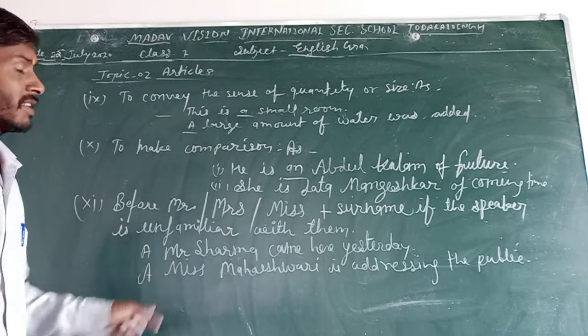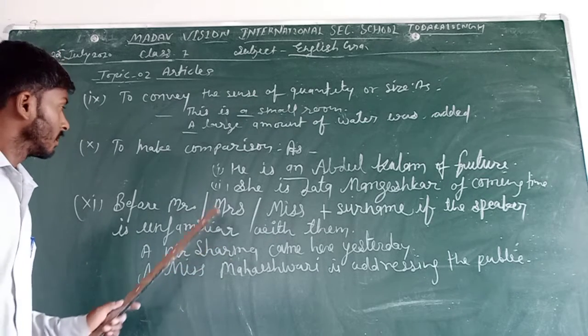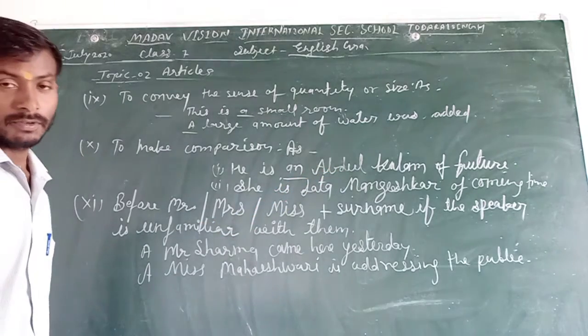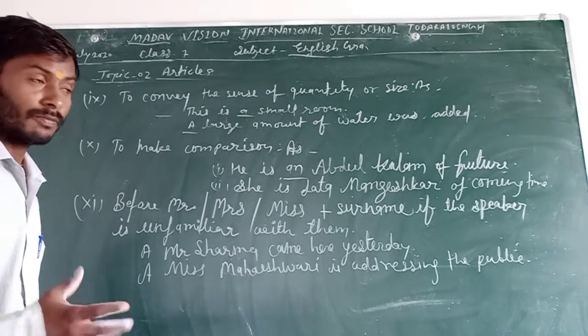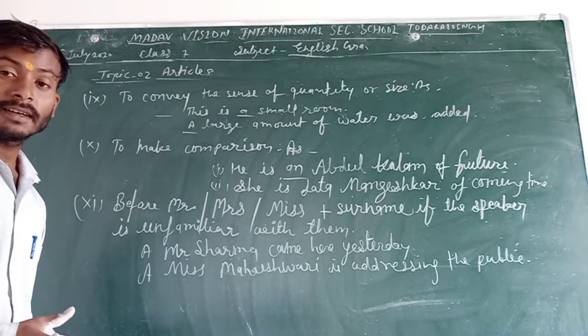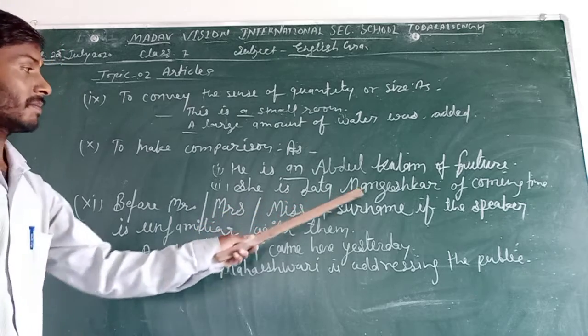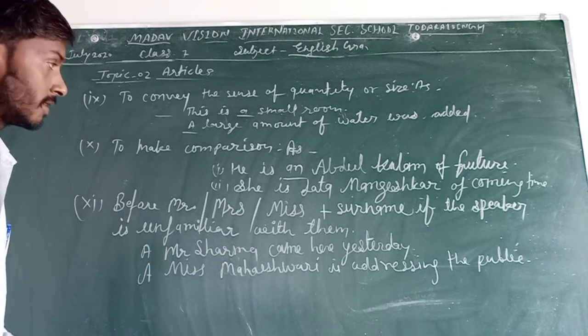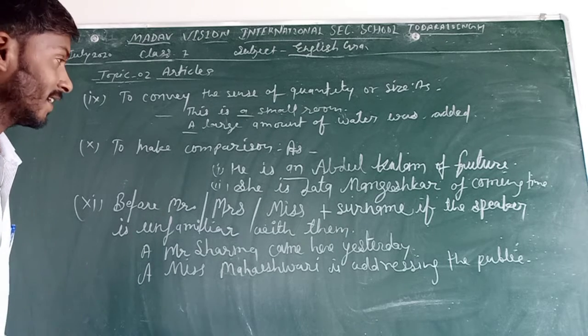To make a comparison. He is an Abdul Kalam of future. So he is compared with Abdul Kalam of future. Lata Mangeshkar of coming time, a Lata Mangeshkar of coming time.